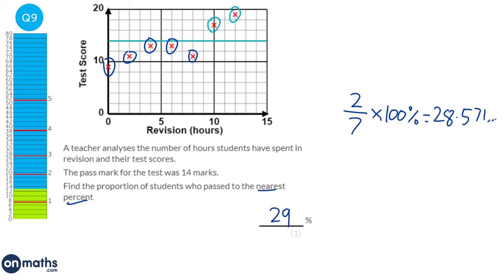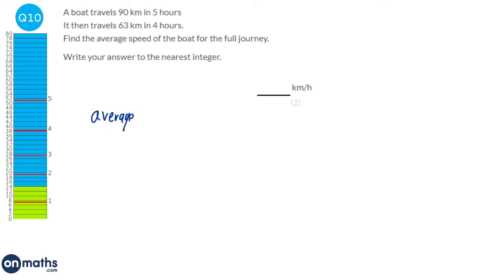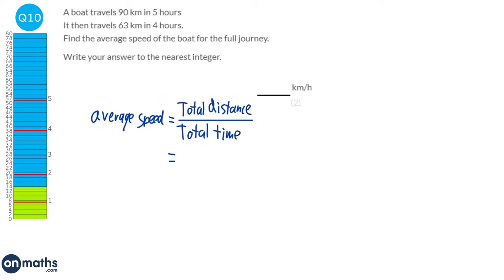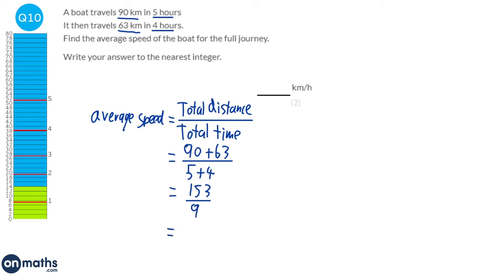To find average speed, we need to do total distance divided by total time. The two distances are 90 kilometres and 63 kilometres, so 90 plus 63 divided by the total time of 5 hours plus 4 hours. That's 153 divided by 9, which gives us 17. The distance is in kilometres and the time in hours, so the answer is 17 kilometres per hour.